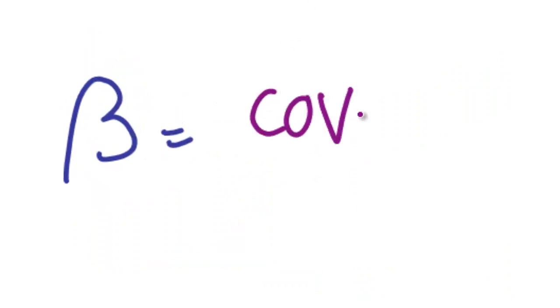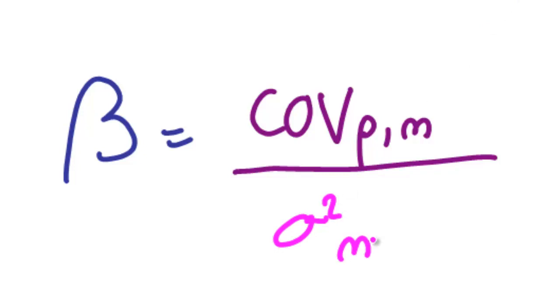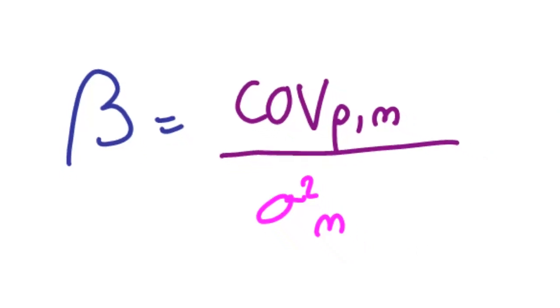Beta is given by dividing the covariance between a target portfolio and the market portfolio. We divide this by the measured variance of the market or its sigma squared. If you're unsure about either covariance or variance, you might want to watch our videos on these two topics, and these are detailed in the show notes.